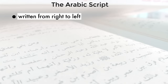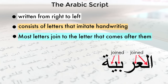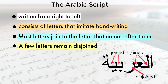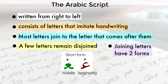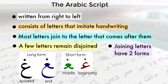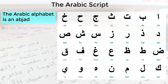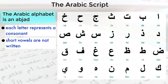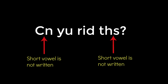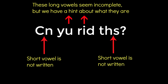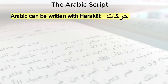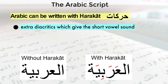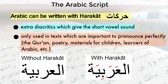The Arabic script is written from right to left and consists of letters that imitate handwriting. Most letters join to the letter that comes after them, though a few remain disjoined. Letters that join have two forms: a short form at the beginning or middle of words, and a long form at the end or when the letter stands alone. The Arabic script is an abjad, meaning each letter represents a consonant, and short vowels are not written — long vowels and diphthongs can be ambiguous. Arabic can also be written with harakat, extra diacritic markings that indicate short vowel sounds, generally used only in the Quran, poetry, or children's material.